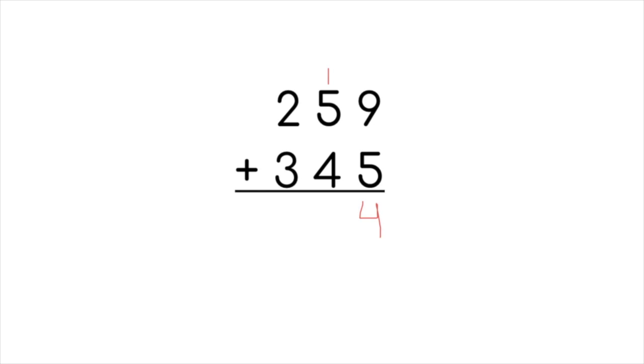Now that we regrouped the tens place, we are going to add our digits in the tens place. So we have a 5 and a 4. 5 plus 4 gives us 9. And then we're going to add the carry digit, which will make it 10. So we're going to do the same thing. We'll put our 0 down and carry our 1 to the next column, which is the hundreds place.